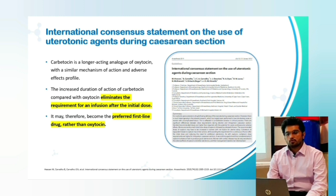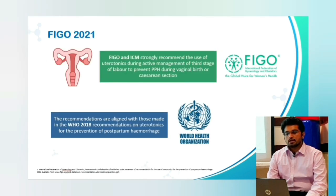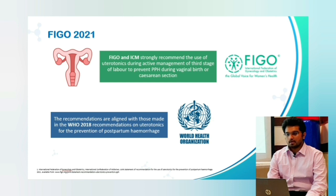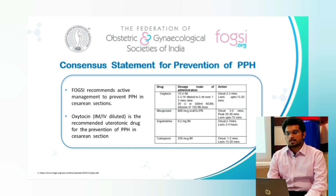The FIGO 2021 guidelines strongly recommend the use of uterotonics during the active management of the third stage of labor to prevent postpartum hemorrhage during vaginal or caesarean delivery, aligned with the 2018 WHO guidelines. FOGSI (Federation of Obstetrics and Gynecology Society of India) recommends active management to prevent postpartum hemorrhage in caesarean deliveries, with oxytocin IM or IV diluted as the recommended uterotonic drug.